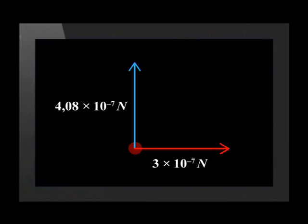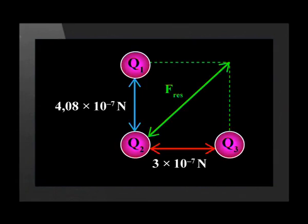Let us now go back to our free body diagram, showing the forces that are being experienced by Q2 as a result of Q1 and Q3. The two forces act at 90 degrees to one another, so the resultant force can be calculated using trigonometry. Can you calculate the magnitude of the resultant force?